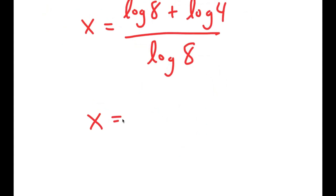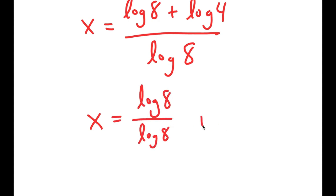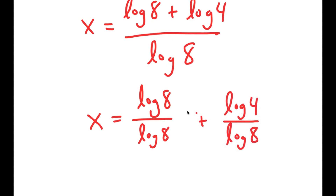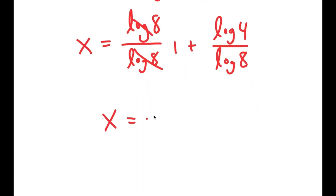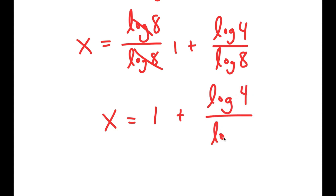This turns into log 8 over log 8 plus log 4 over log 8. These two cancel out to give 1, so I get x is equal to 1 plus log of 4 over log of 8.